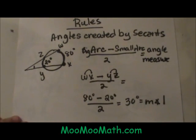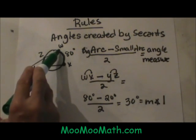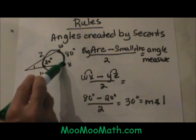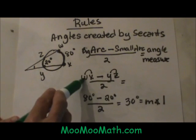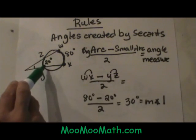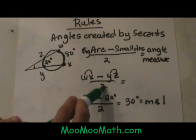Here is a second example of that. We are going to take WX the large arc minus YZ the small arc. We are going to divide by two.